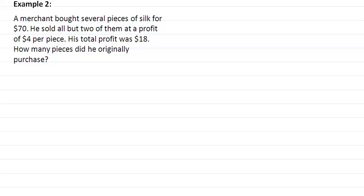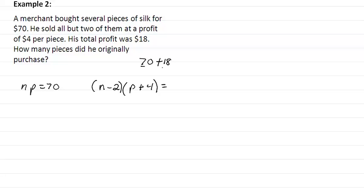In our second example, a merchant bought several pieces of silk for seventy dollars, so NP equals seventy. On the second equation, he sold all but two pieces at a profit of four dollars a piece, so the number sold is n minus two and the price is P plus four. His total profit was eighteen dollars, so his total revenue was seventy plus eighteen, which equals eighty-eight dollars.